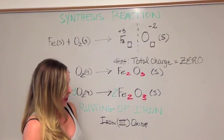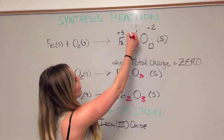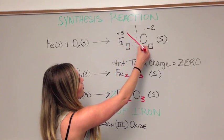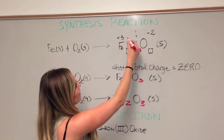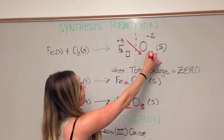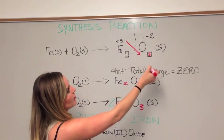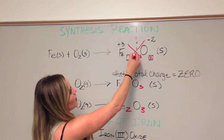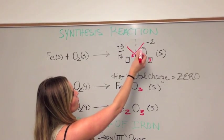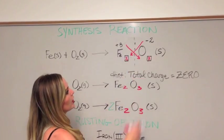So using the criss-cross method, we would draw an arrow down and take the 3 from the Iron and place it here. Draw another arrow, take the 2 from the Oxygen and place it here.